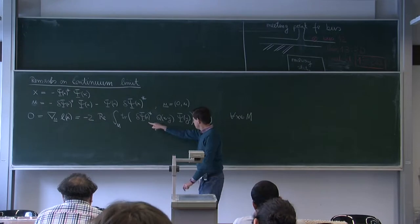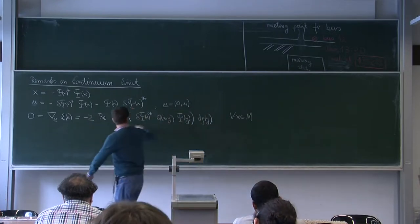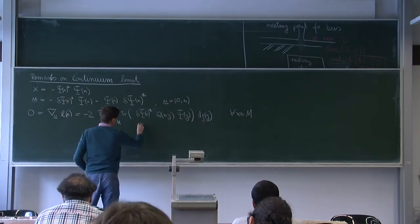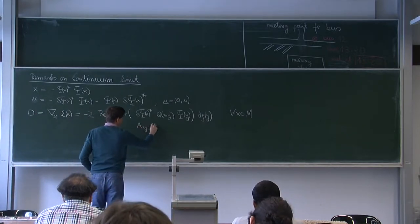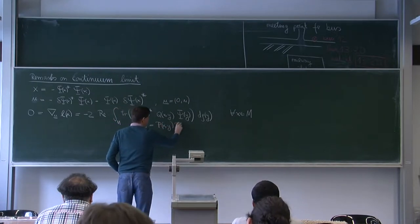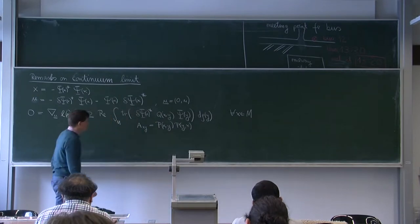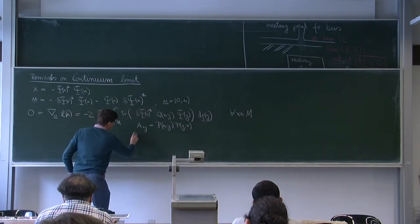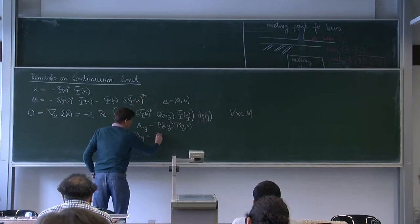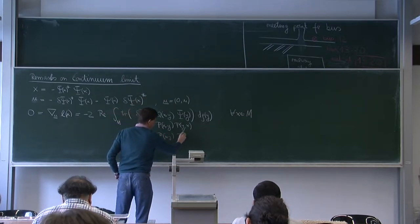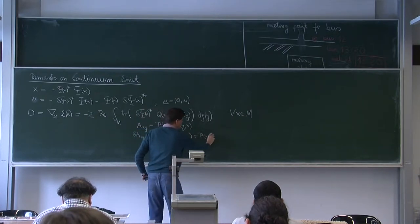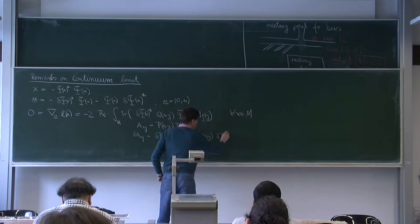Just to explain the structure here: we are working with formulations on A(x,y). The closed chain is P(x,y) times P(y,x). This means the variation of this closed chain is just delta P(x,y) times P(y,x), plus P(x,y) times delta P(y,x).